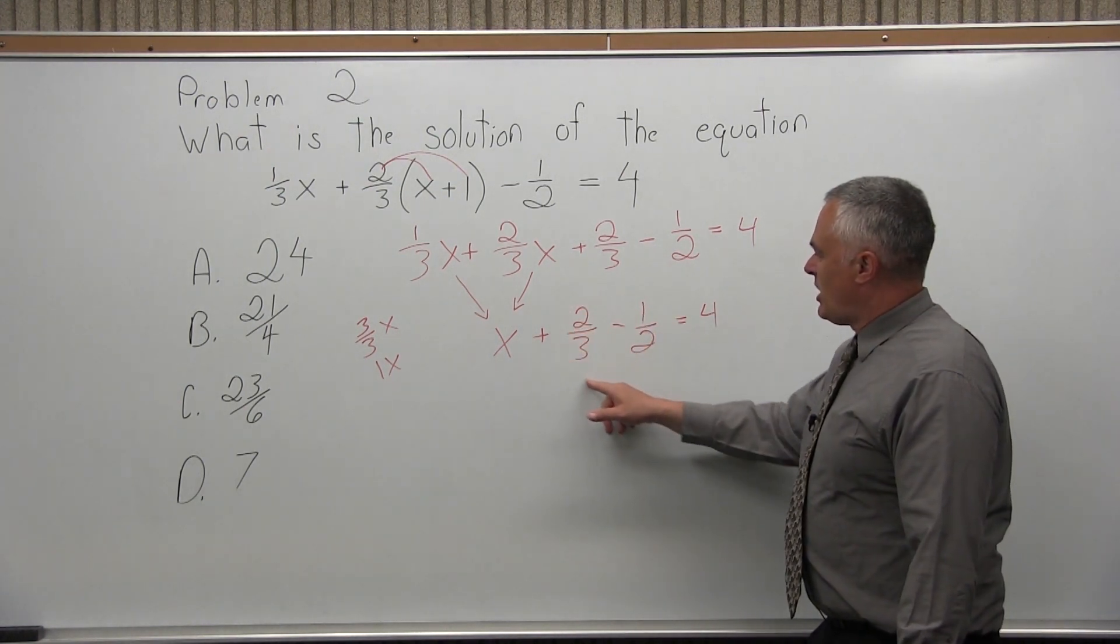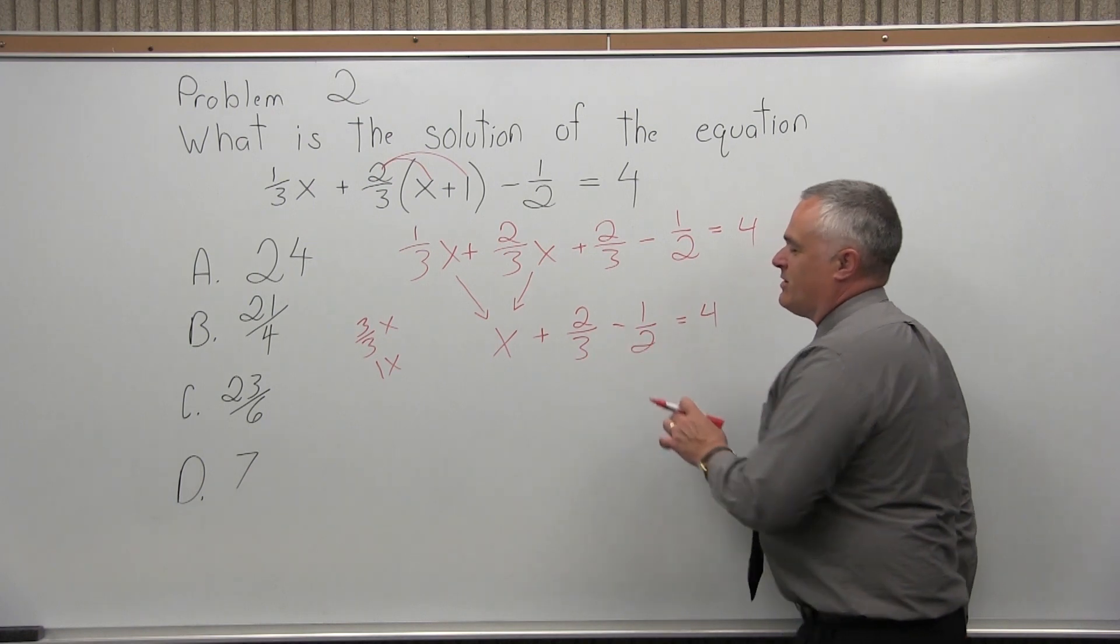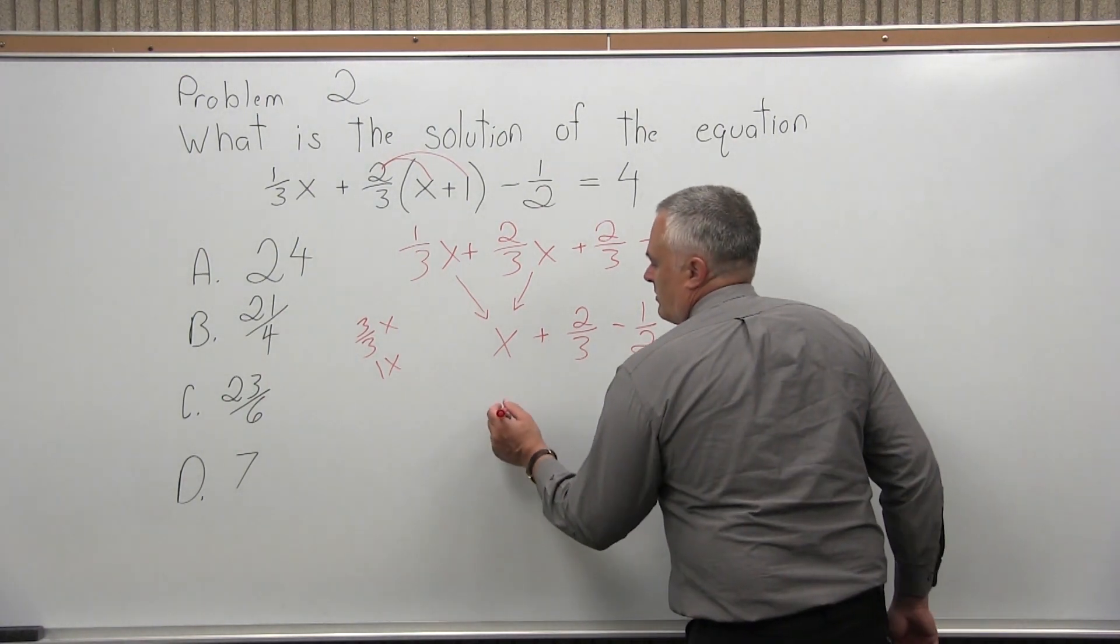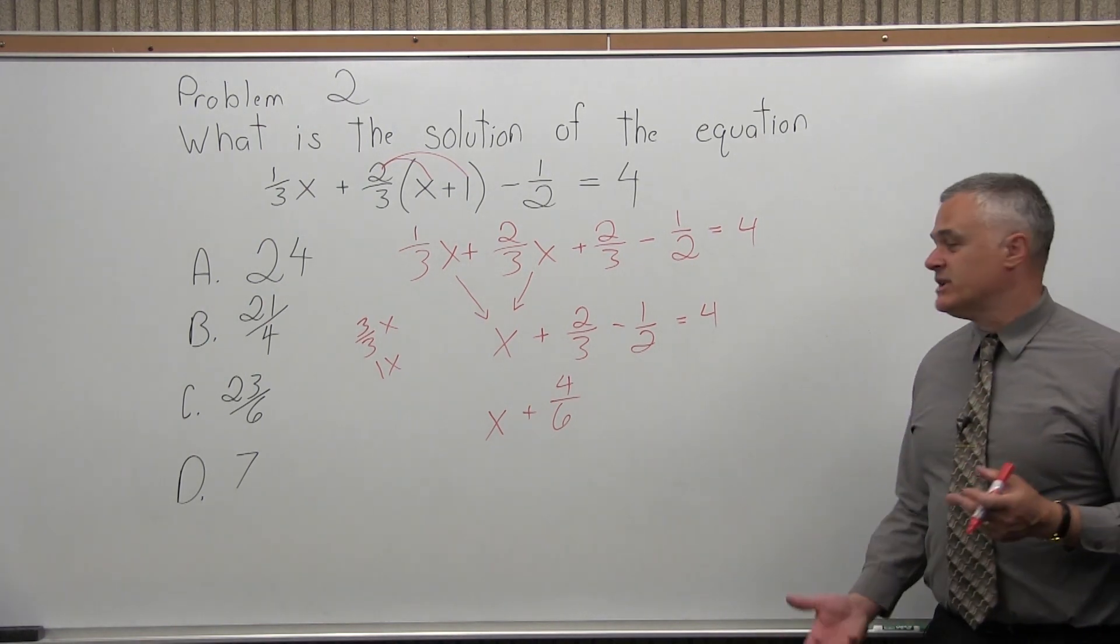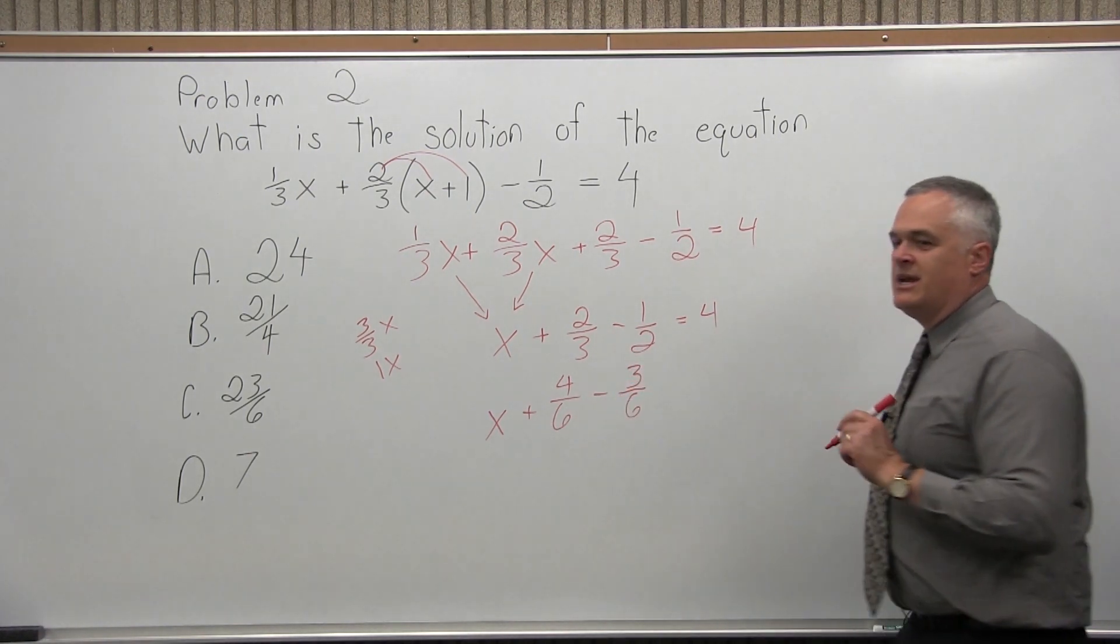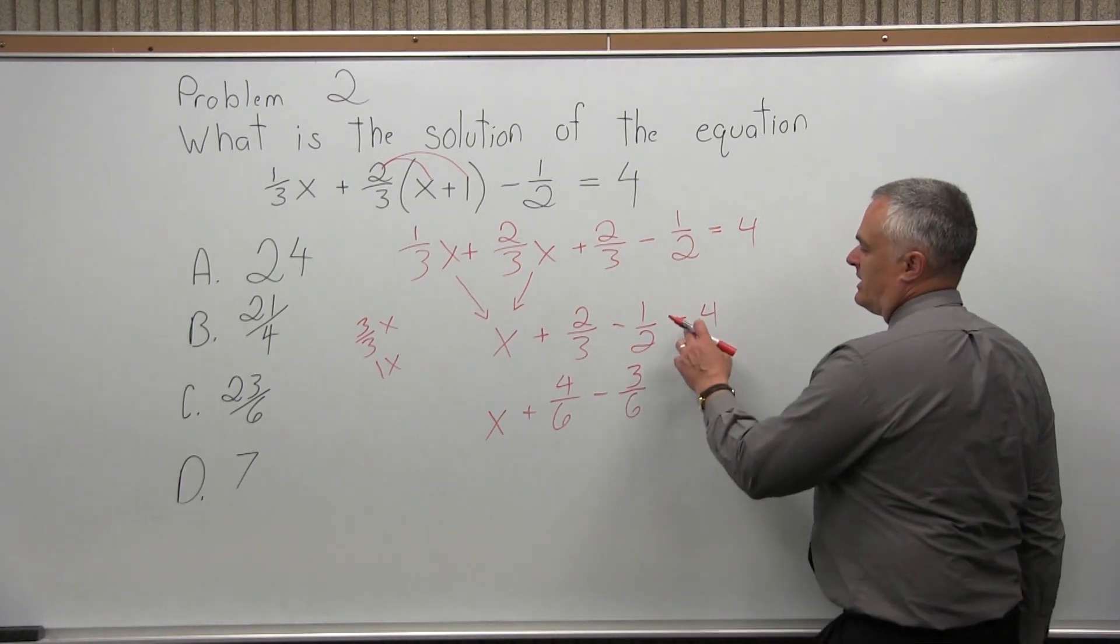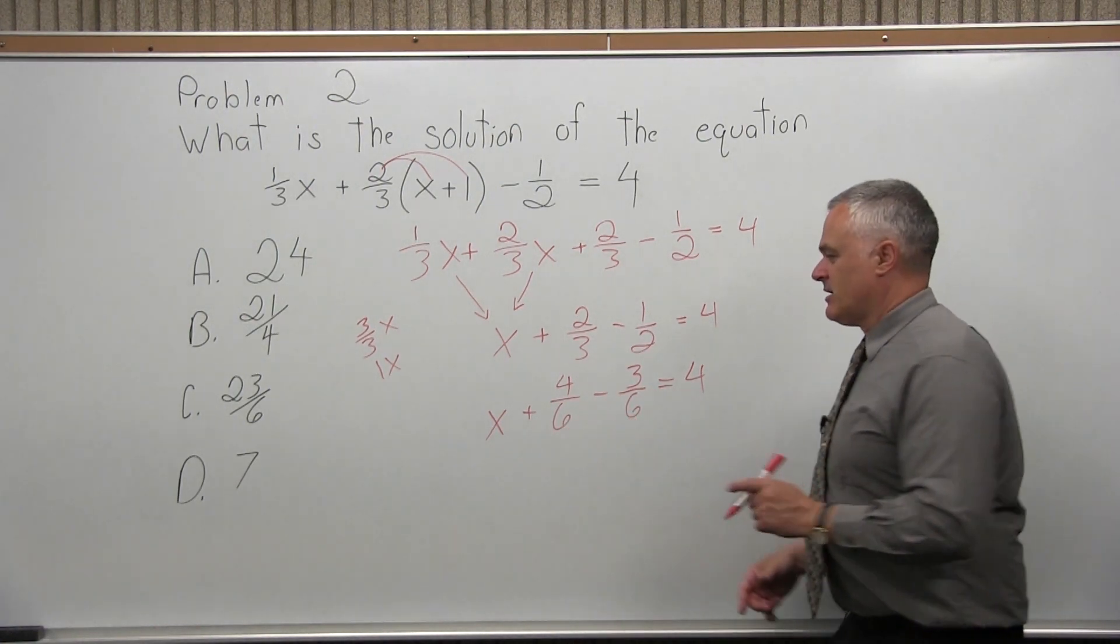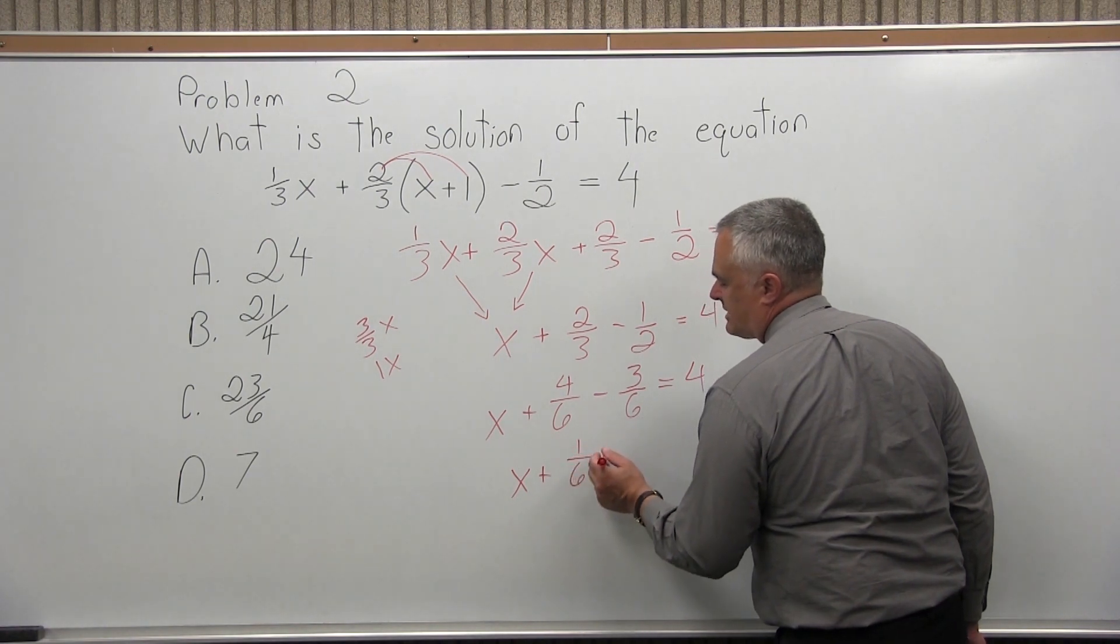I'm not done yet, but I've simplified. I have x plus 2 thirds minus 1 half equals 4. Now, let's combine the negative 1 half and the positive 2 thirds here. I need a common denominator. One has a denominator of 3, the other has a denominator of 2. A good common denominator will be 6. I'm going to leave the x. The 2 thirds, let me change that to 4 over 6. That's still 2 thirds if you reduce it. The minus 1 half, I'm going to rewrite that as 3 over 6. That is still 1 half, but I've written it in a form where I have matching denominators. I have common denominators now.